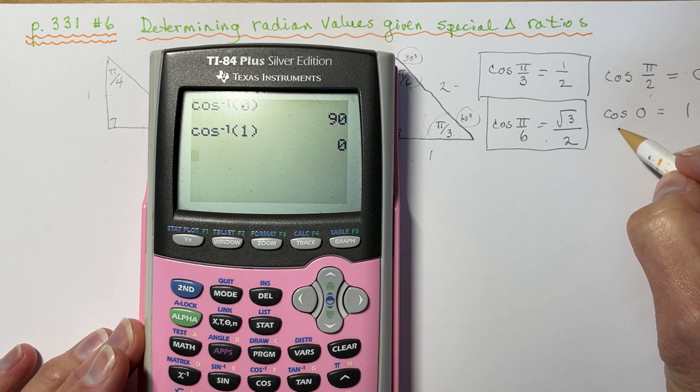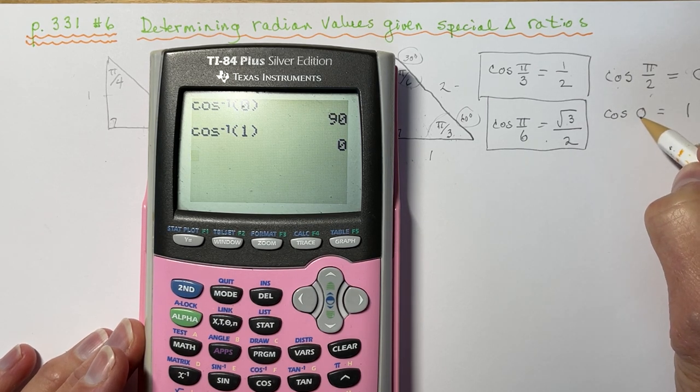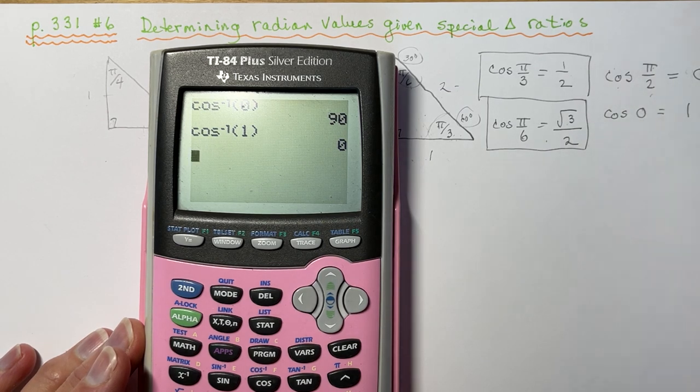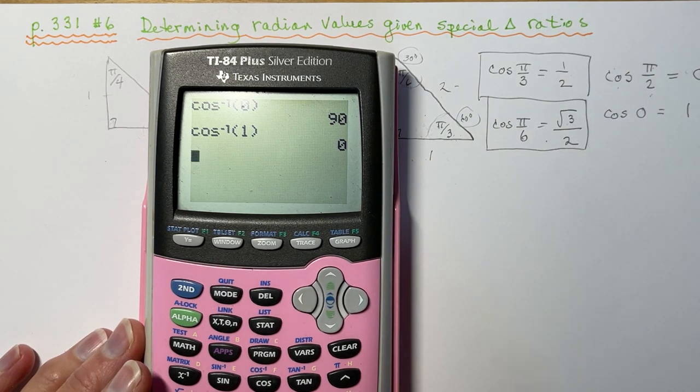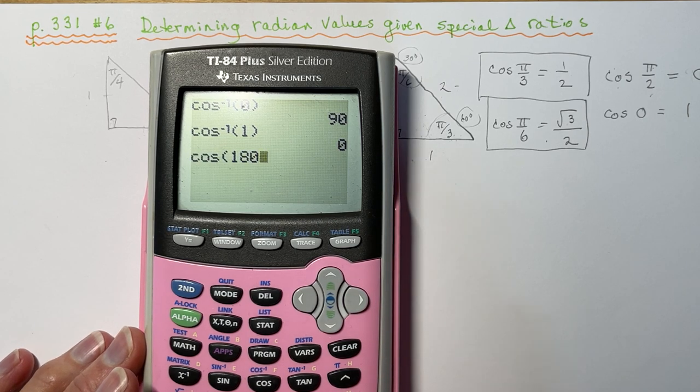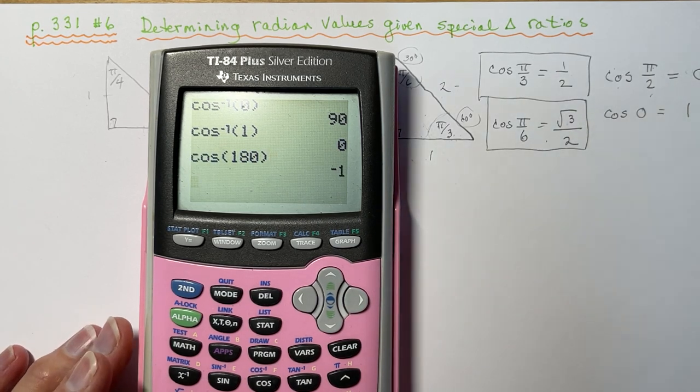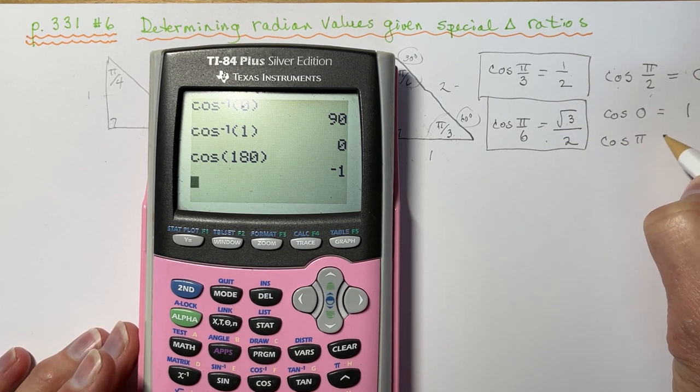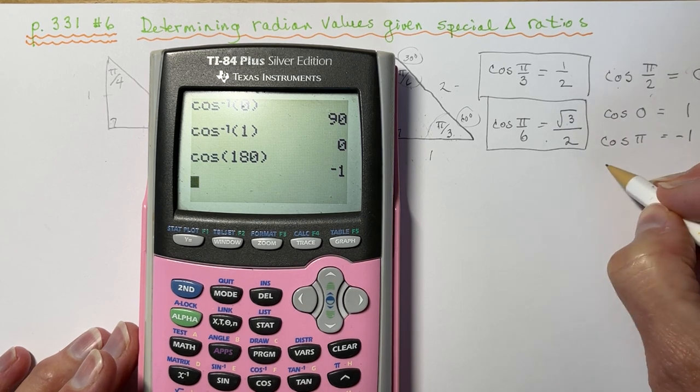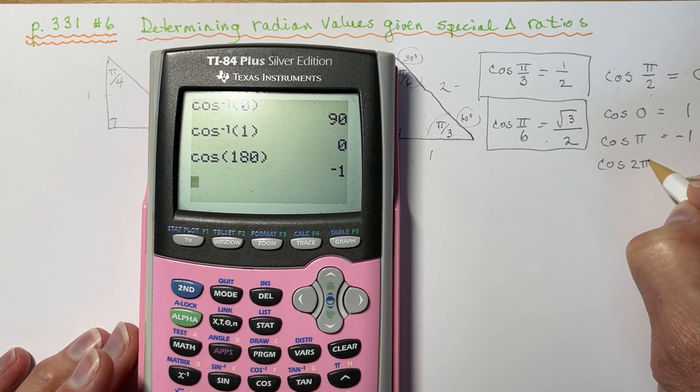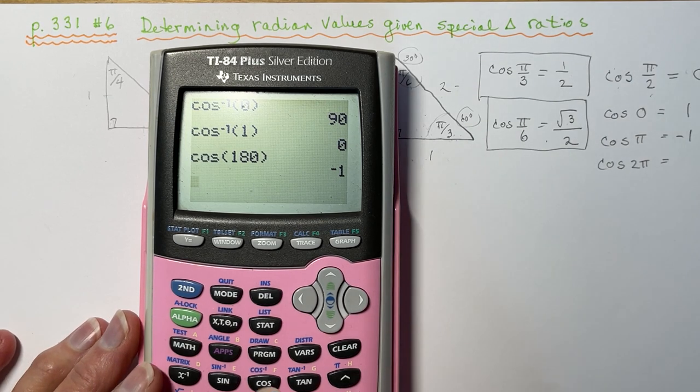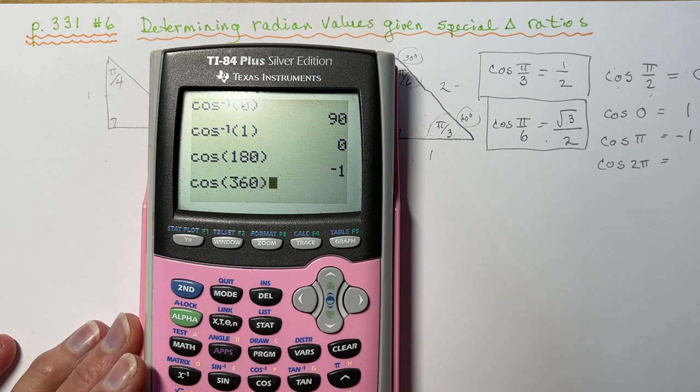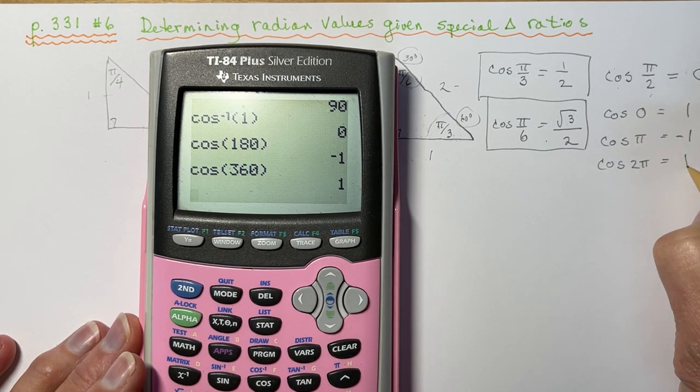And that would also work for, because we don't have 0 in our range, our domain, sorry. We can also check to see what is the cos. Let's say, what if I put in the cos of 180 degrees, which is the same as pi, right? I get negative 1. So cos of pi equals negative 1. What's the cos of 2 pi going to be? Well, you can do the same thing here. You can say cos of 360. Well, that's a positive 1.